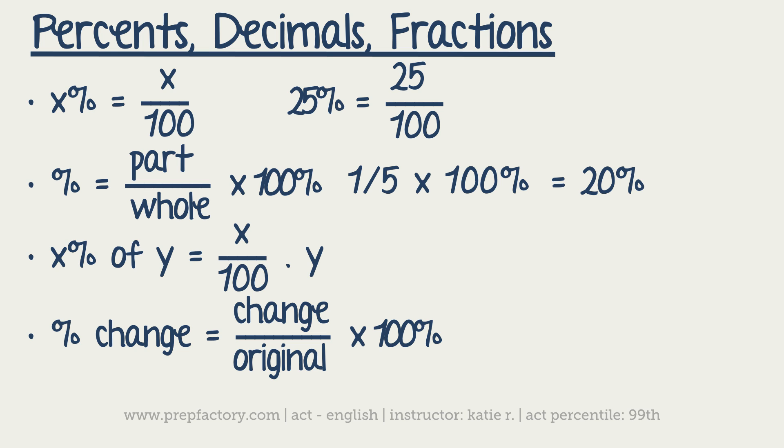And then the next one, x percent of y is equal to x over 100 times y. You can use this equation if you're using it as a percentage or as a decimal. The x over 100, basically that's just changing your percentage into a decimal.